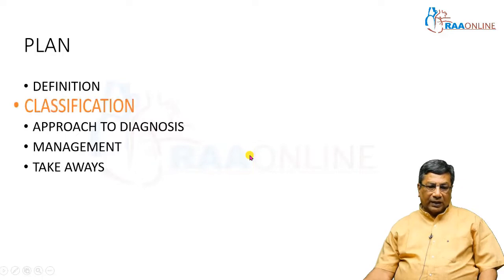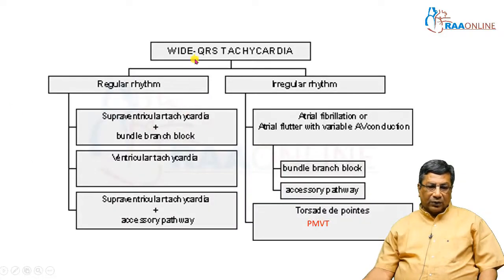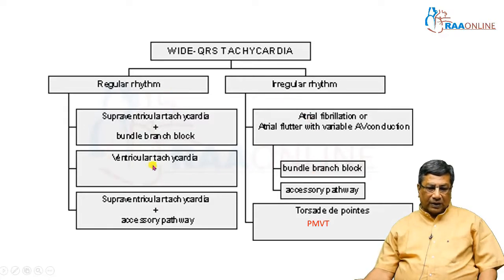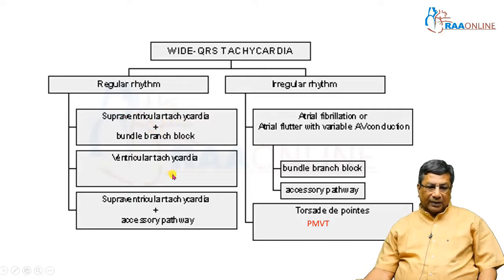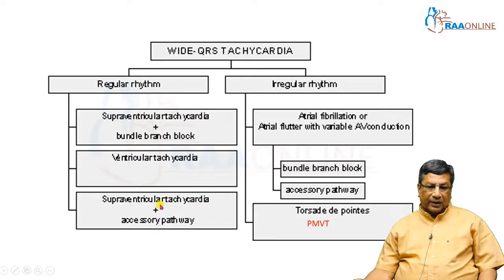Just as we classified narrow QRS complex tachycardia, we classify wide QRS tachycardia into regular wide QRS and irregular wide QRS. For regular wide QRS, the commonest is ventricular tachycardia, or it can be a supraventricular tachycardia with a pre-existing bundle branch block — what we call SVT with aberrant conduction — or anterograde conduction of a supraventricular tachycardia through the accessory pathway, called antidromic tachycardia.